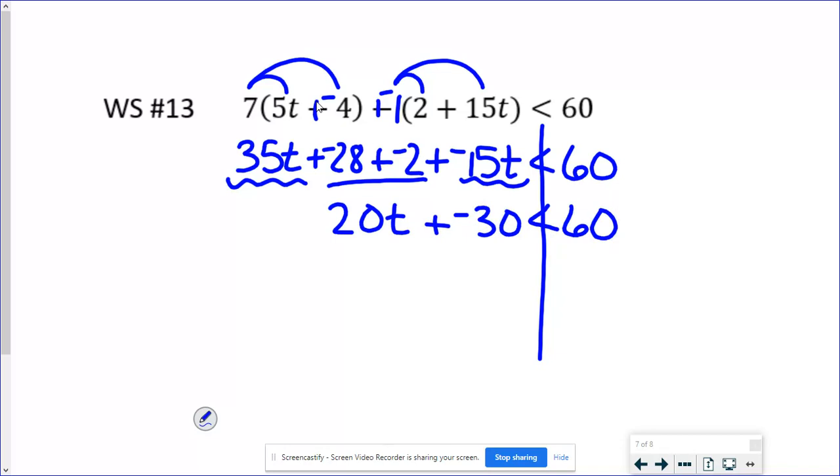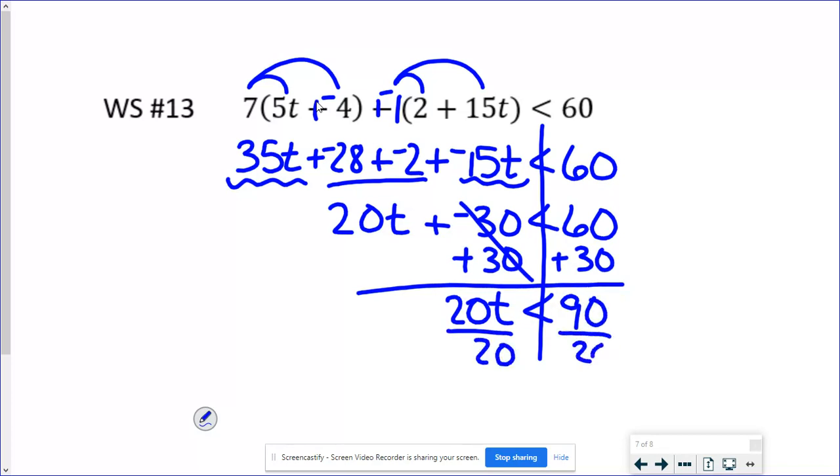Now just getting the t by itself, I would add 30. So 20t is less than 90. And dividing by 20, t is less than. I can divide both of those by 10, which is just really going to get rid of the zeros. 9 over 2 or 4 and a half or 4.5, however you want to write that. All of those mean the same thing. But I don't have to flip the sign and I don't have to move the variable first because it was already on the left hand side.